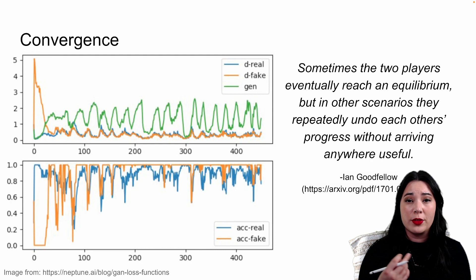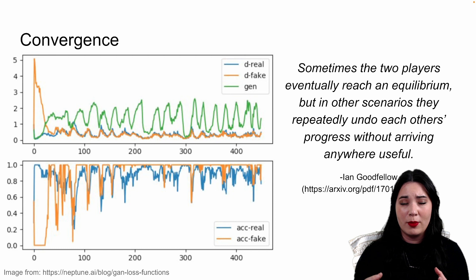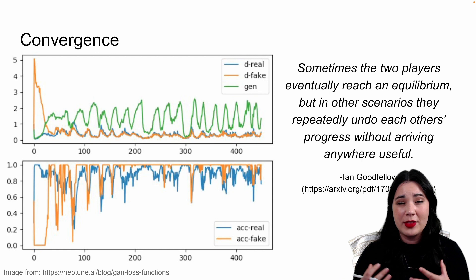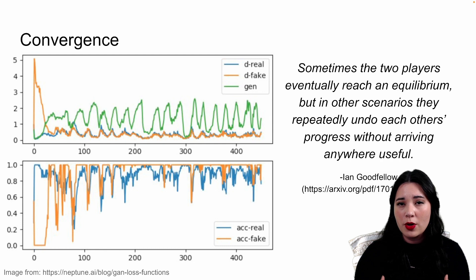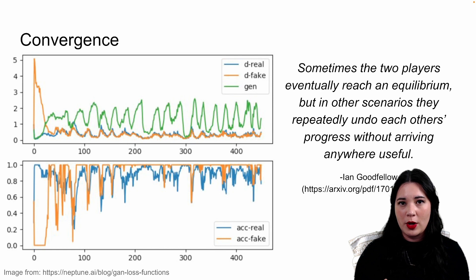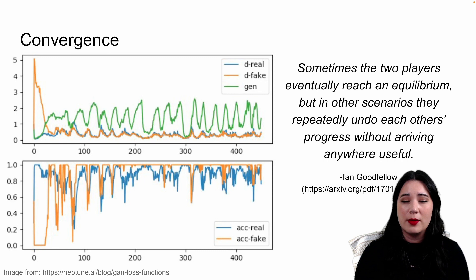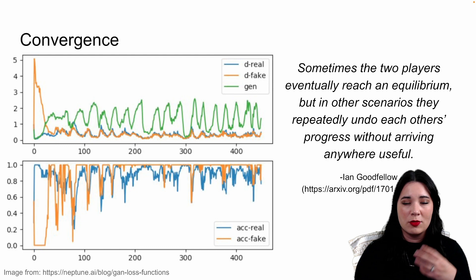GANs also have a problem with convergence. Unlike other neural networks, GANs are two networks with opposing goals trained together. The discriminator tries to accurately tell whether samples are fake or real, while the generator tries to create samples close enough to fool the discriminator. As Ian Goodfellow says, sometimes the two players reach an equilibrium, but in other scenarios they just repeatedly undo each other's progress without actually learning anything useful.